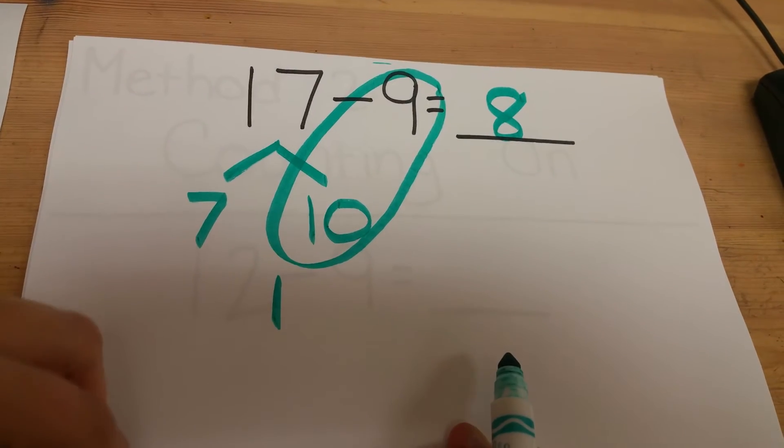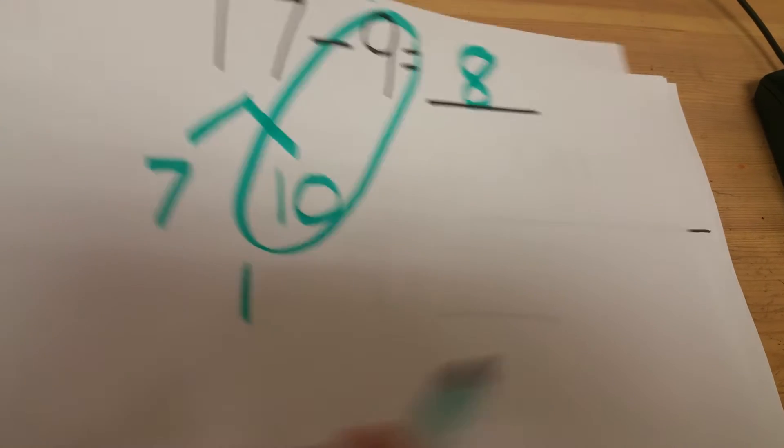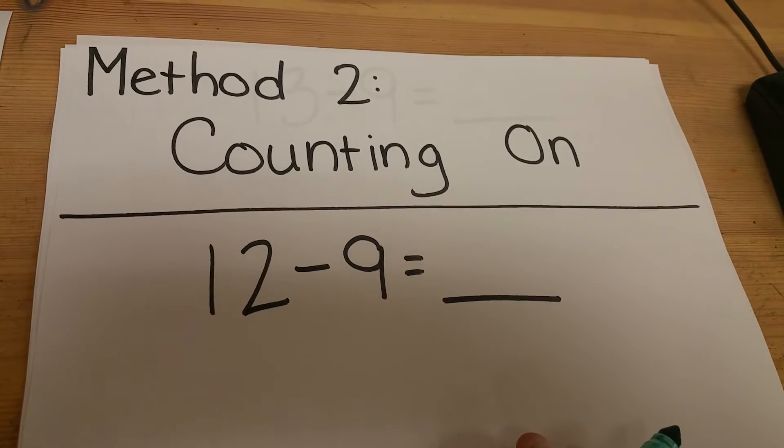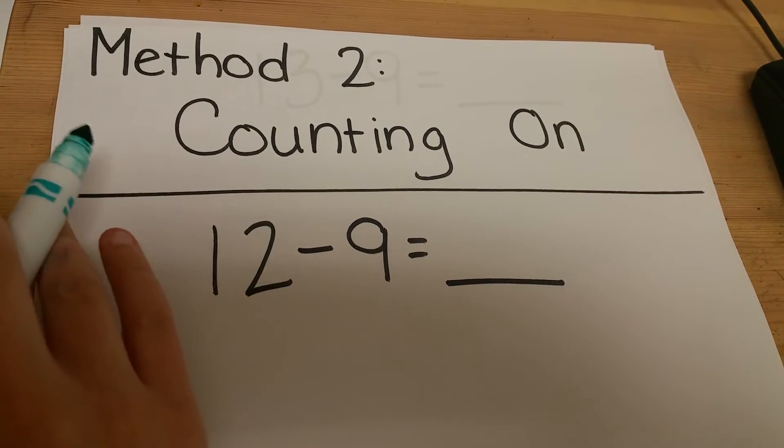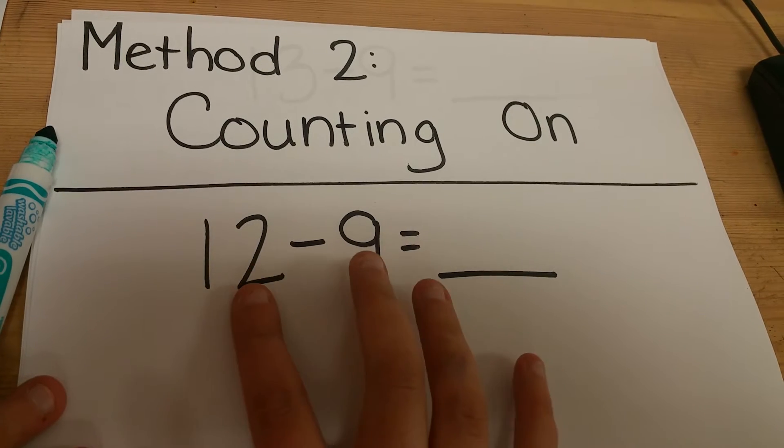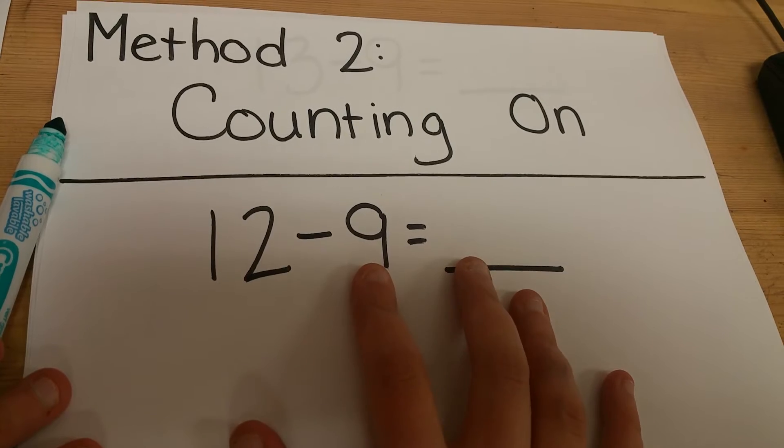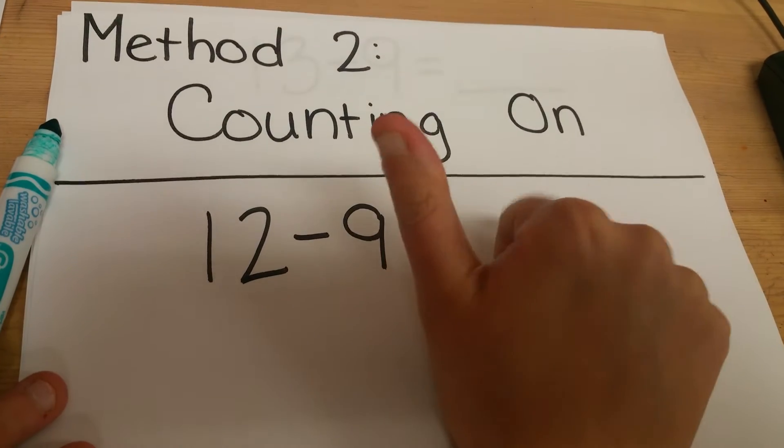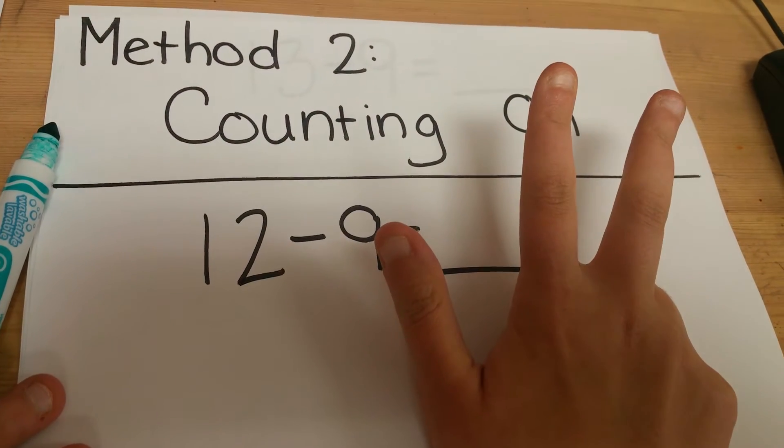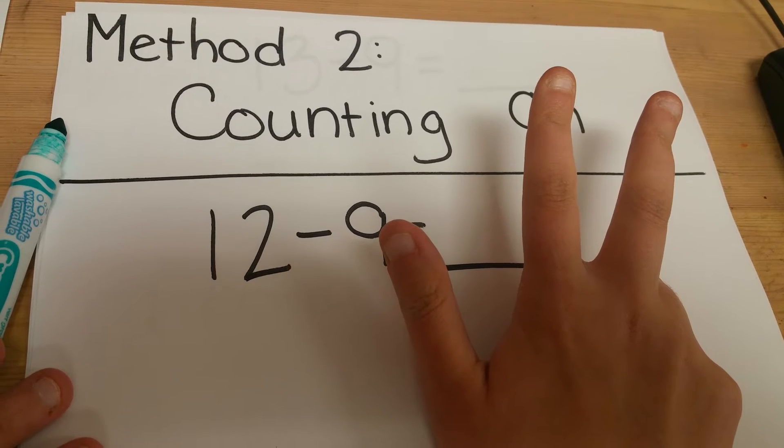Our other method is counting on. This is similar to what they've done in the past in kindergarten. If they have 12 minus 9, counting on you'd start at 9 and count up: 9, 10, 11, 12. 12 minus 9 is 3.